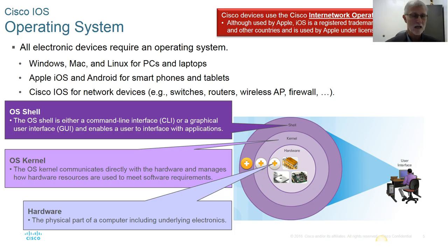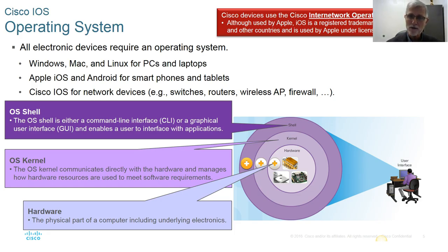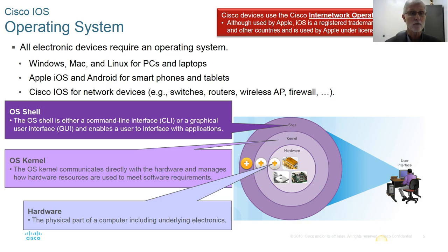All devices are basically made up the same way. Every device has hardware that controls electronics — hard drives, memory chips. Then there is a kernel, an operating system kernel, which directly interfaces with the hardware and manages how that hardware deals with software. Then you've got the shell — essentially either a command line interface or a graphical user interface that allows the user to interface with the kernel.